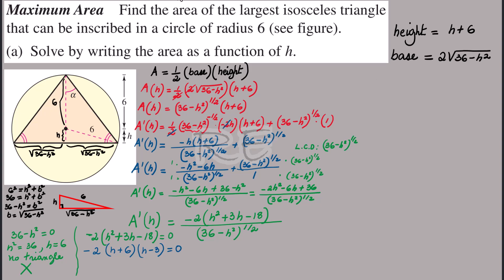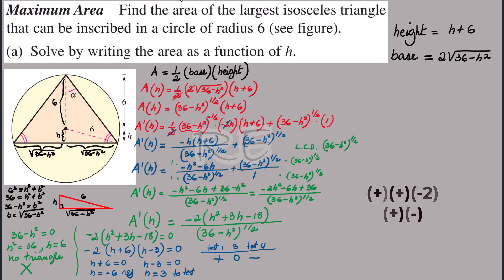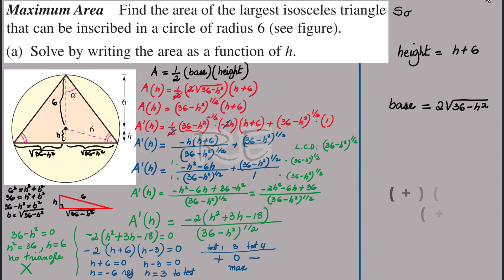When h plus 6 equals zero, h equals negative 6, but the side cannot be negative so we reject that. We only check h equal to 3. Testing a value before 3 — say h equals 1: 6 plus 1 is positive, and 1 minus 3 is negative, so their product is negative, and times negative 2 becomes positive. Testing h equals 4: 6 plus 4 is positive and 4 minus 3 is positive, giving a negative result. So the derivative goes from positive to zero to negative, confirming h equals 3 is a maximum.